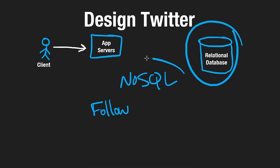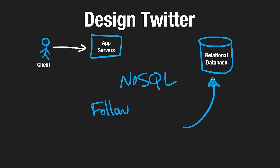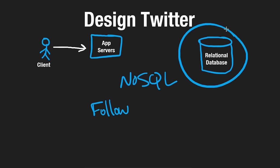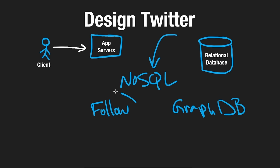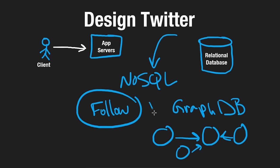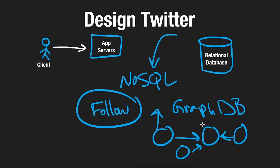After finishing our high-level design, we might want to revise this — we could store tweets and user information in a NoSQL database and use a graph database for the follower relationship. A graph DB is essentially like an adjacency list where every person is a node, and to find all the people they follow you look at outgoing edges, and to find all followers you look at incoming edges. Depending on your expertise and what your interviewer is familiar with, you can have a discussion about these differences.